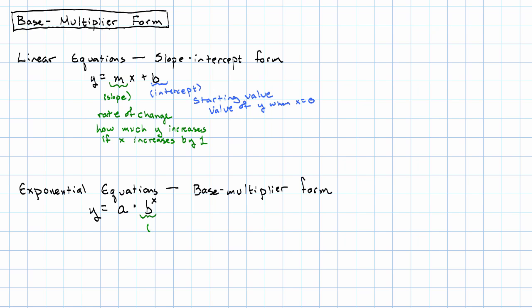It's this number b, which we'll call the multiplier. This is what we multiply y by if x increases by one.